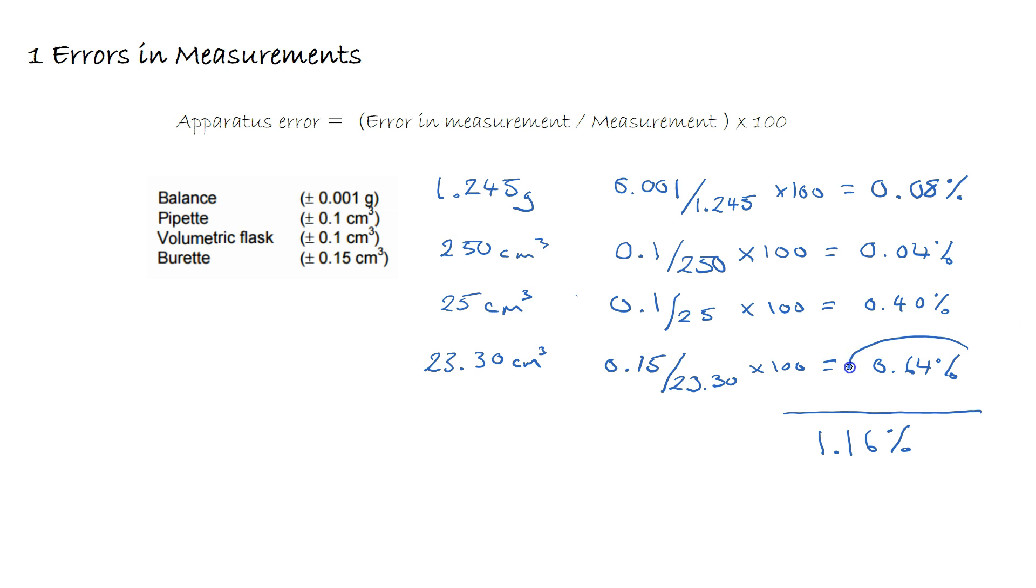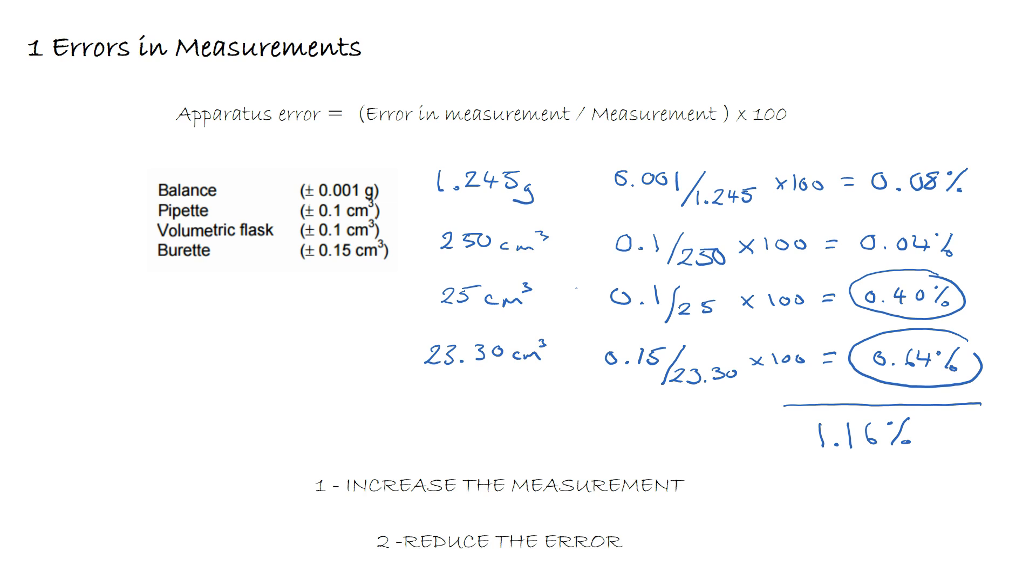Importantly, if we look at our experiment, it identifies two areas where we could improve: the burette reading of 0.64% and the pipette. There are two ways to decrease the apparatus error: we can either increase the measurement somehow or reduce the error in our equipment.